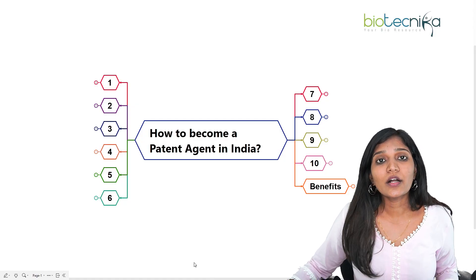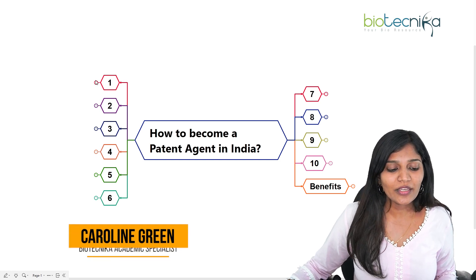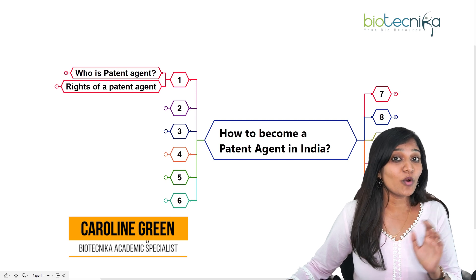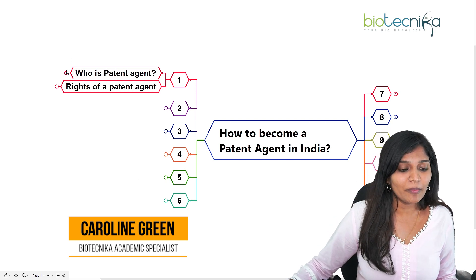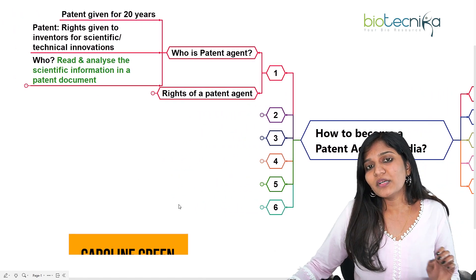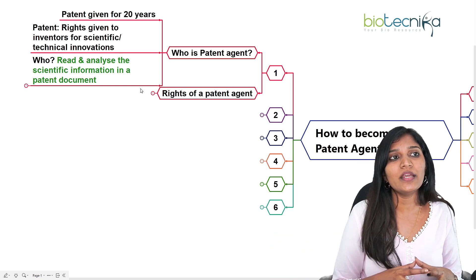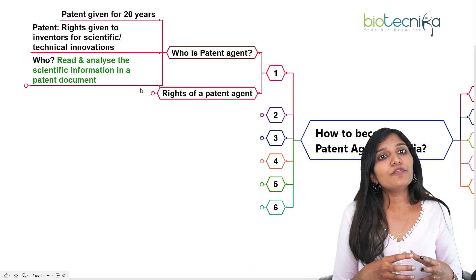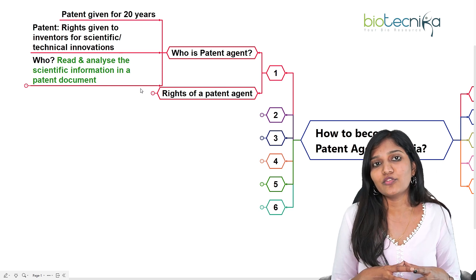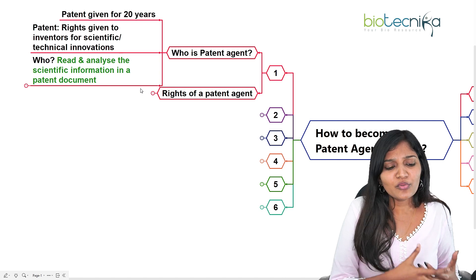Let's talk about what a patent agent is in India. First, let's understand who a patent agent is and what a patent is all about. A patent is given to a person for almost 20 years. For example, where a person has discovered a drug for a particular disease or found out an instrument or equipment.